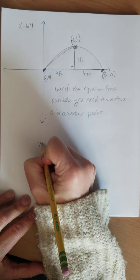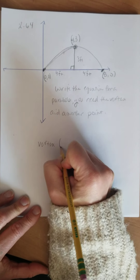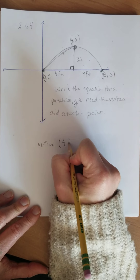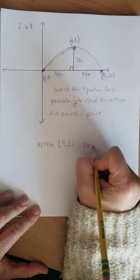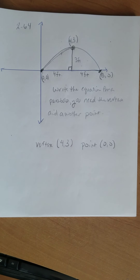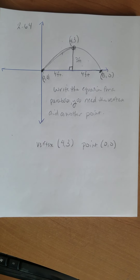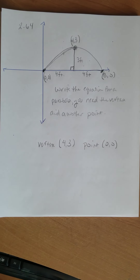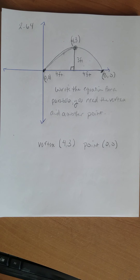I have the vertex at (4, 3). The point I'm going to use — I'd highly suggest using (0, 0) if you can. In your homework, you won't be able to use the origin because I'll give you the point. But if you can choose it and move it, why not use the origin? Most real-life problems you can use the origin.